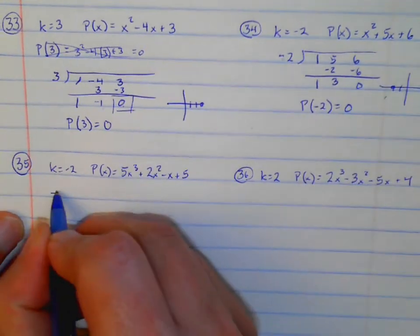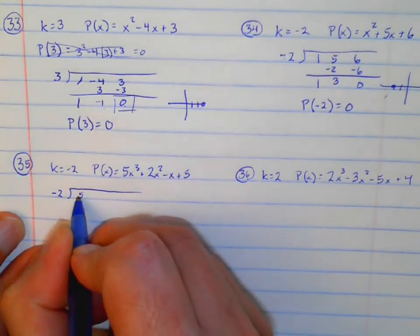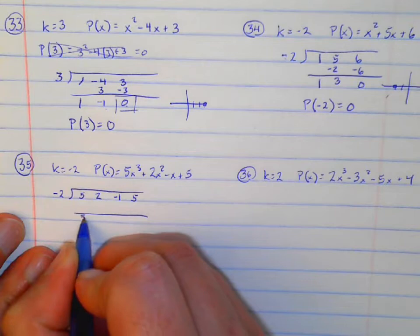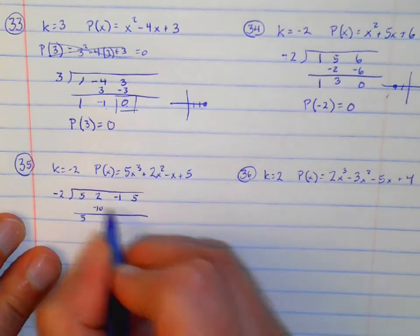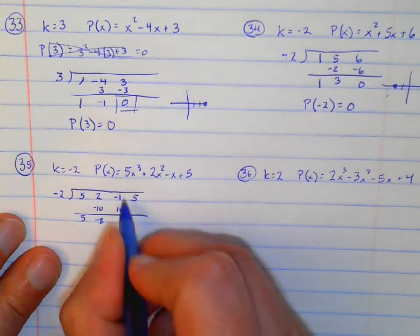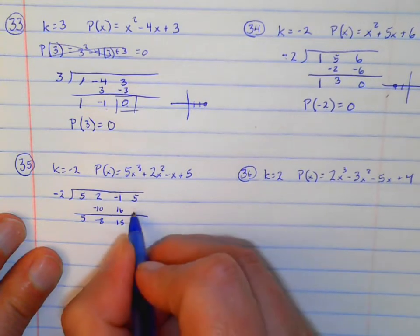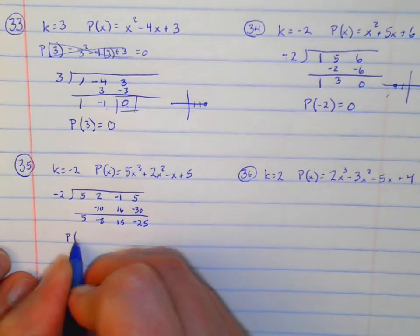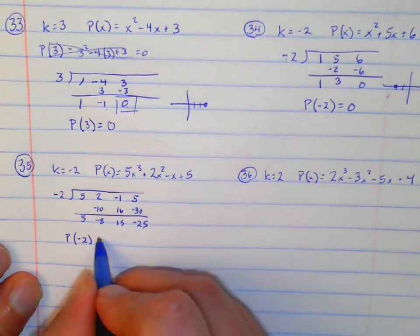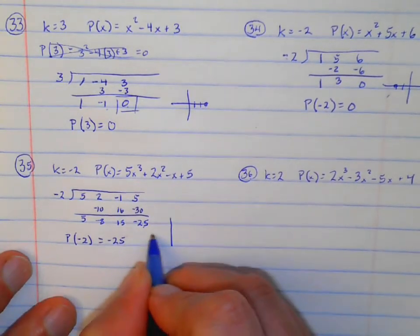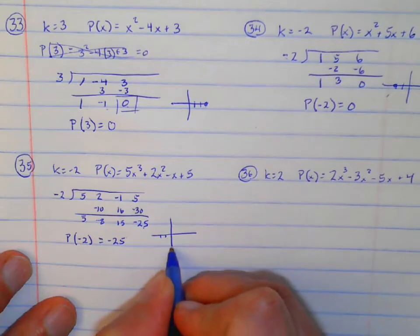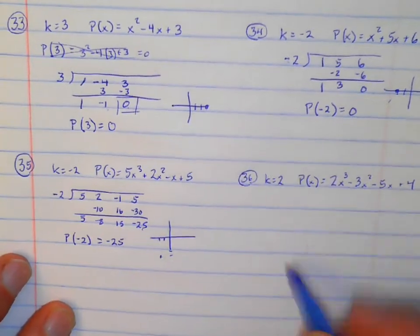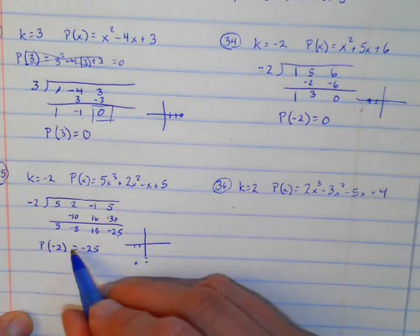Number 35: I'm going to divide this out using synthetic division. We have 5x to the third, 2x squared, minus 1x, plus 5. Bring down the first term. Multiply gives negative 10, add to give negative 8. Multiply is 16, add gives 15. Multiply to be negative 30, add gives negative 25. So I know that P of negative 2 equals negative 25. A point on the graph would be at negative 2, negative 25 — which is not a zero like the other ones were, but we can still evaluate for that point.